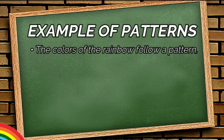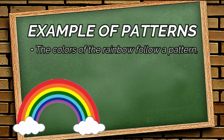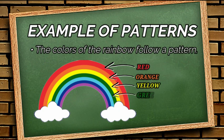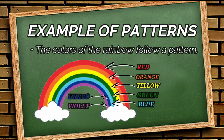Another example, the colors of the rainbow follow a pattern with acronym ROYGBIV. It stands for red, orange, yellow, green, blue, indigo, and the last is violet.